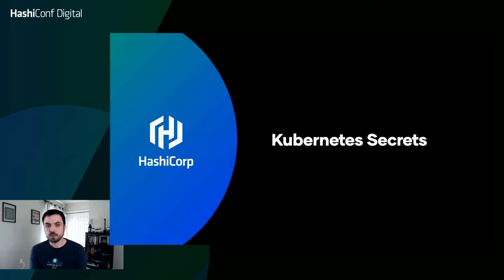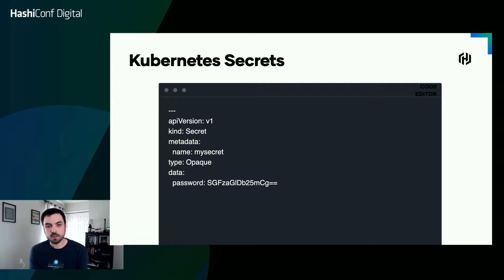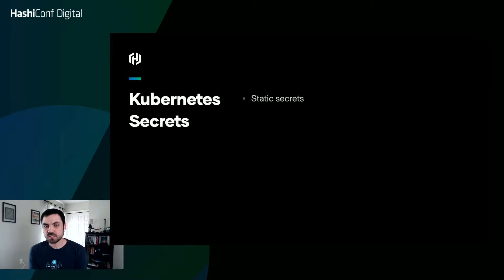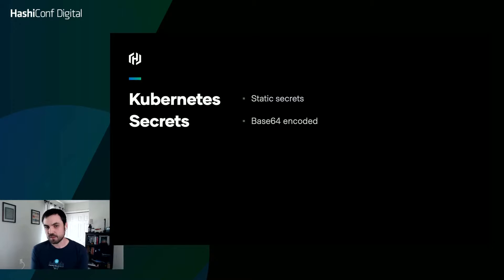So Kubernetes secrets. This is an example of a Kubernetes secret. This secret is called MySecret and it has just one secret value — a password that is base64 encoded. Kubernetes secrets require base64 encoding if you create it this way. What are the advantages or disadvantages? First, this Kubernetes secret is a static secret — some operator has set it up ahead of time, meaning if the password were to change, someone would have to go in and update it. It's base64 encoded, and if you're not using an encrypted etcd storage solution, these secrets are only base64 encoded, which is not really protected — access to the secret is not encrypted.